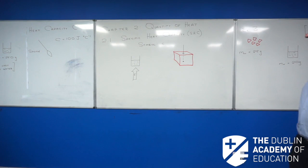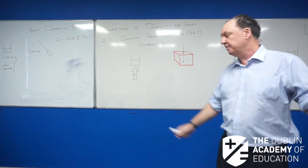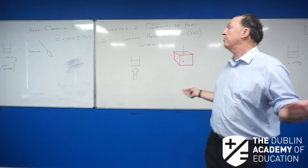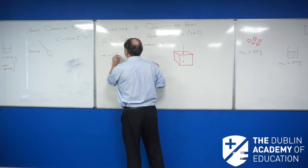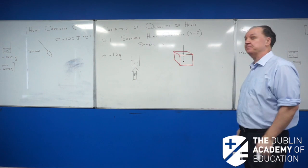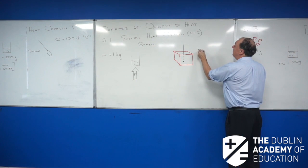The symbol for SHC is small c. Let me explain the concept. I have some water here, and I'm going to take a definite amount — that's called Specific. The amount I'm going to take is a mass of one kilogram. The SI units for mass are kilograms. I'm also going to take some copper, and I'm going to take the same mass, one kilogram.